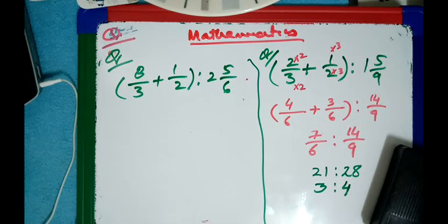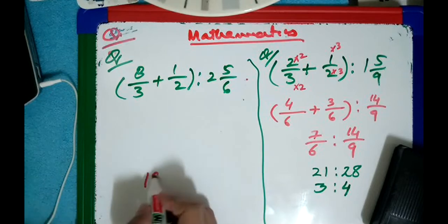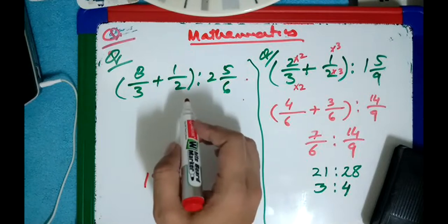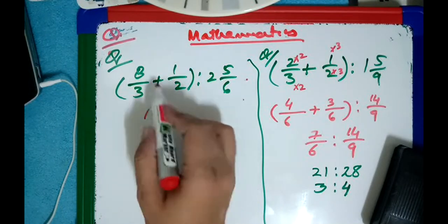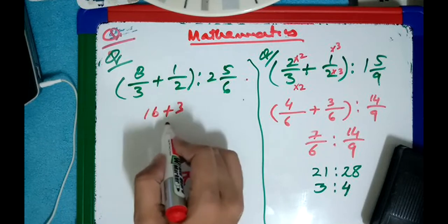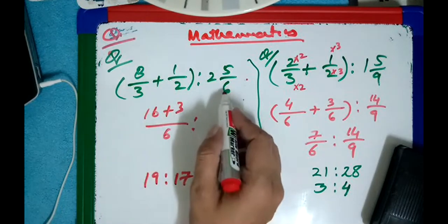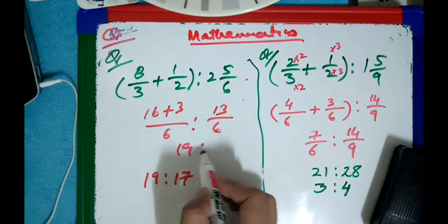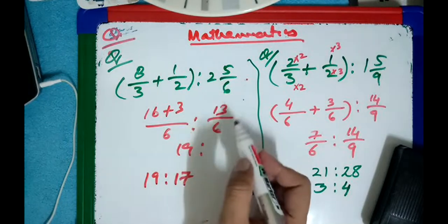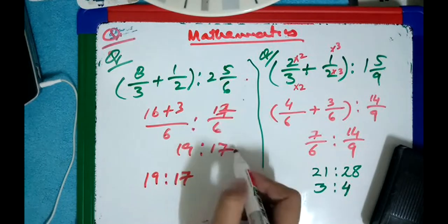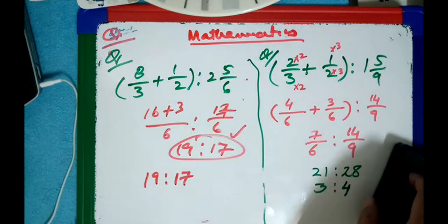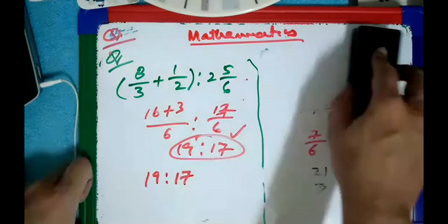The answer is 19 ratio 17. Okay, 19 ratio 17 — let me quickly check it. 8 × 3 = 16, plus 3 = 19... wait: 8 × 2 = 16, plus 3 = 19 over 6... then 2 × 6 = 12, plus 5 = 17 over 6. Divide by 6 gives: 19 ratio 17. Masha Allah, perfect! You are doing well now. Really nice, Mahmood.